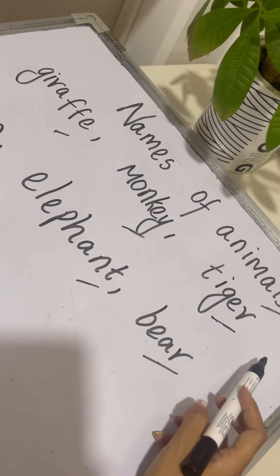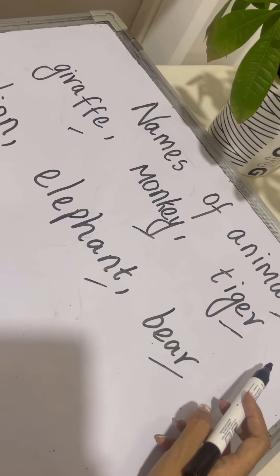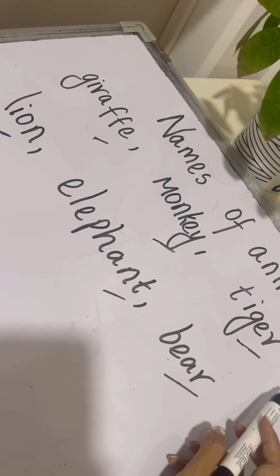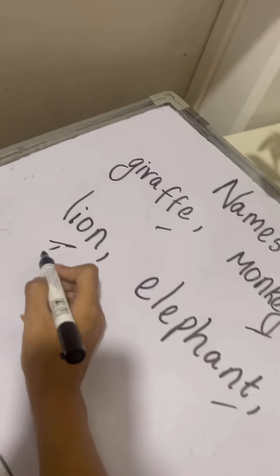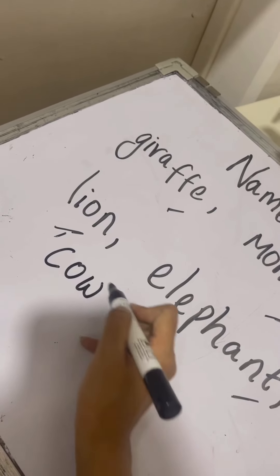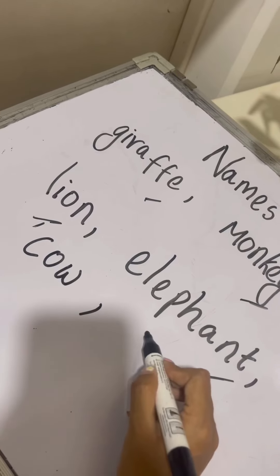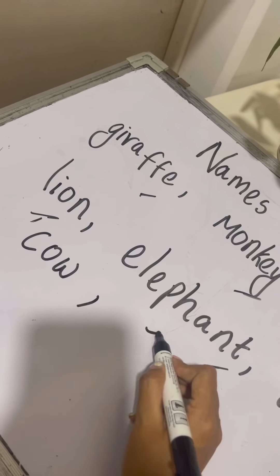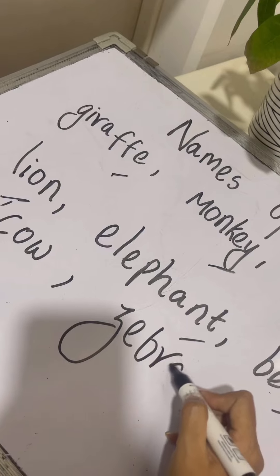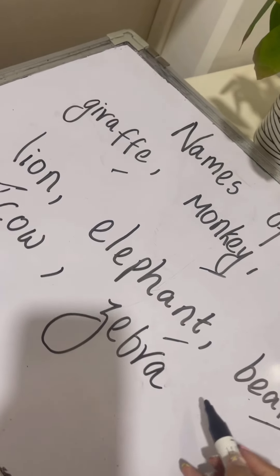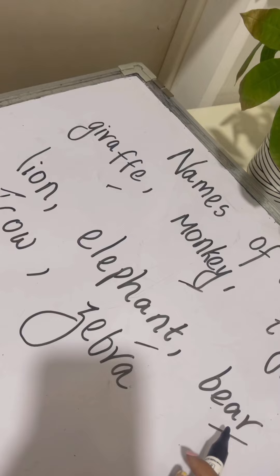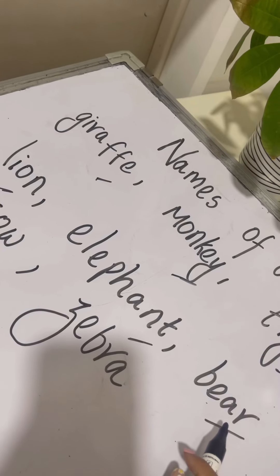Can you tell me more names of animals? Very good. Cow, zebra. Very good. These are the names of animals.